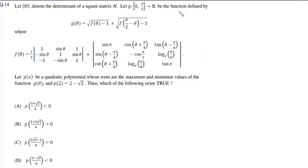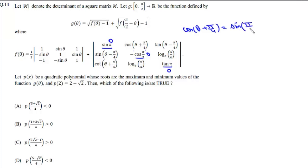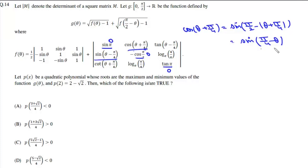First we will simplify this determinant. We know that sin(π) = 0, cos(90°) = 0, and tan(π) = 0. This entry is sin(π − π/4) and this is cos(θ − π/4). We know that cos(θ) = sin(π/2 − θ), so it becomes sin(π/2 − θ + π/4), which gives sin(π/4 − θ).